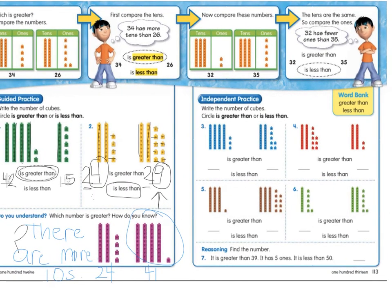Look at the next side. Let's read the directions. Write the number of cubes. Circle is greater than or is less than. So you're going to count the cubes over here. Count the cubes over here. Write this number here. This number here. And then you're going to tell me, is this number greater than this number? Or is this number less than this number? Same for four, five, and six.